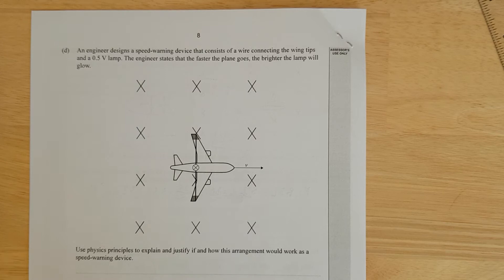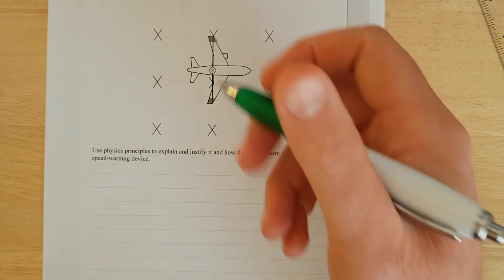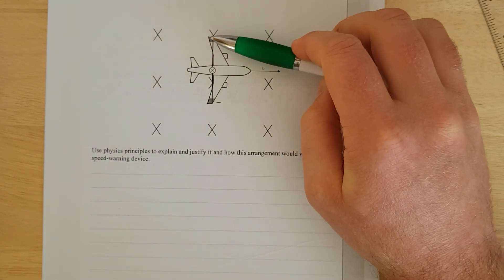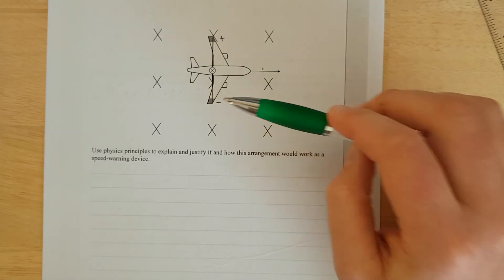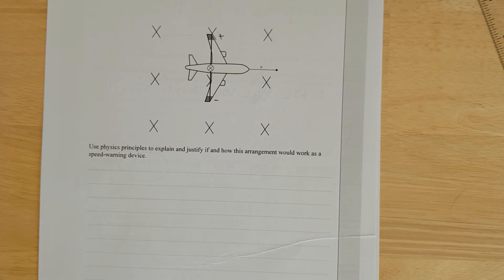An engineer designed a speed warning device that consists of a wire connected to wingtips and a half volt lamp. The engineer states the faster the plane goes, the brighter the lamp glows. This is a super common question they ask every year - some loop going through a magnetic field asking if you can power anything. Assuming the red end is positive and the other negative, all positive charges get pushed to the top. No matter what, for current to flow there needs to be a loop of wire outside the magnetic field. You're inside Earth's magnetic field, you can't get out of it, so there's no way you can ever get this to work.